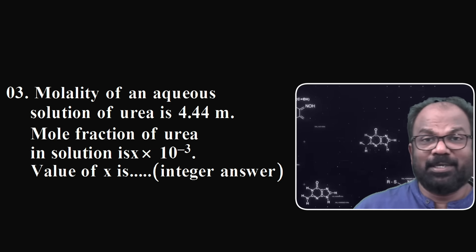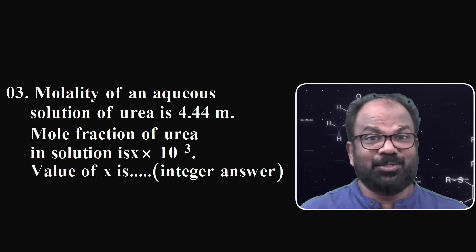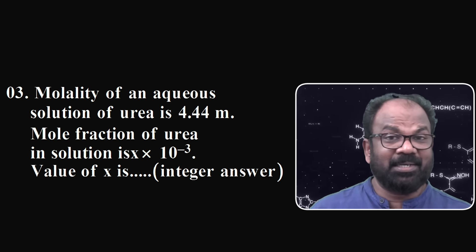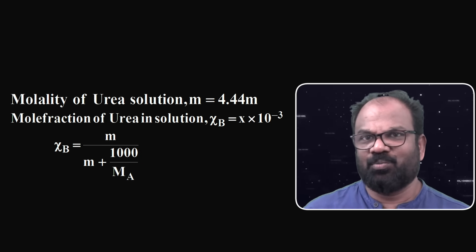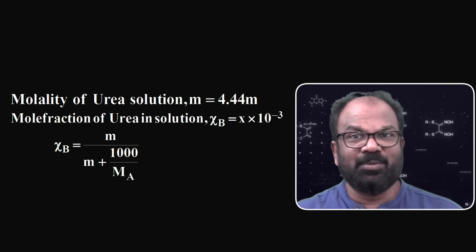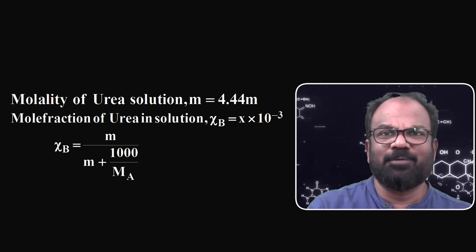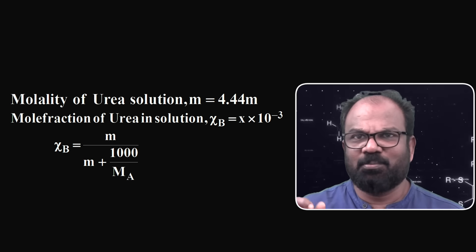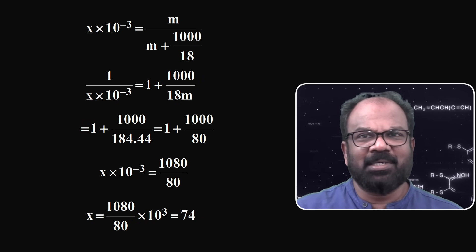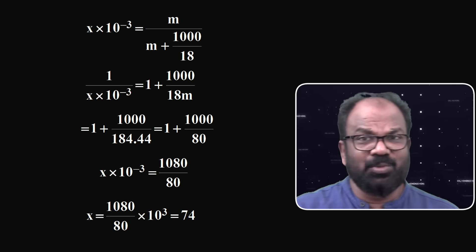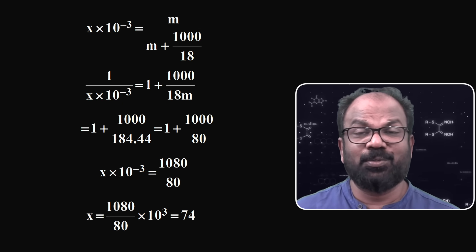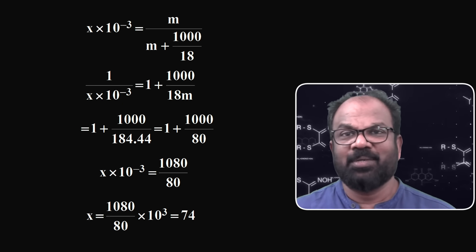Next, question number 3. Molality of a urea solution is 4.44 molar. The mole fraction of urea in solution is X × 10⁻³. Then the value of X is ___ (integer answer). Here molality of urea solution is given as 4.44, and we need to find X. We know the relationship: mole fraction of solute χb = molality / (molality + 1000 / molecular mass of solvent Ma). Here the molecular mass of solvent (water) is 18. Substituting the values, the mole fraction χb equals 74 × 10⁻³. So the value of X is 74.